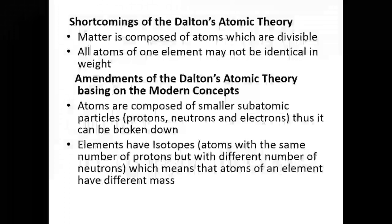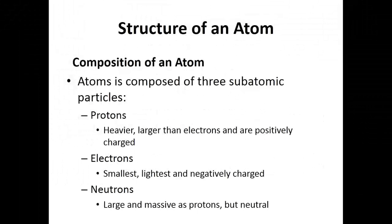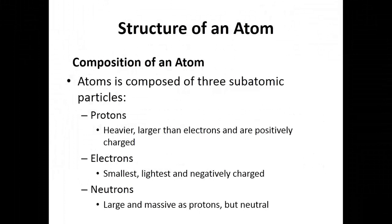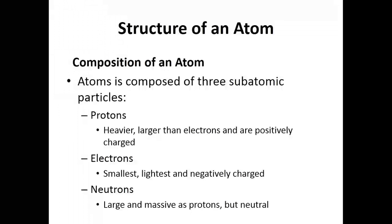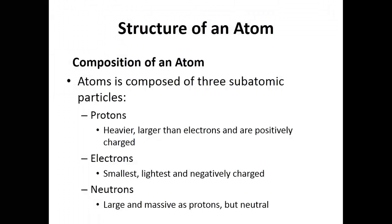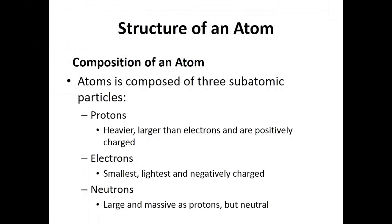That was the amendment of Dalton's theory — scientists corrected those concepts, while others remained correct until today. Now regarding the structure of atoms: we looked at the history of how the atom was discovered. Matter is composed of atoms, and atoms are composed of subatomic particles. The atom has protons, which are very heavy and larger than electrons and are positively charged — discovered by Rutherford. Electrons are the smallest and lightest, negatively charged. Neutrons are as large and massive as protons but are neutral. That is the composition of an atom.